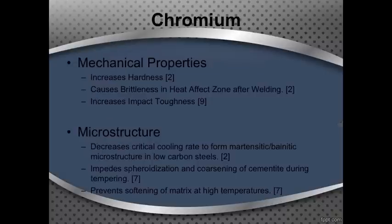The first element I'd like to talk about is chromium. Chromium is a very versatile element that you can add to steel. Among the mechanical properties it affects is the hardness — it increases the hardness — but it can also cause brittleness in the heat-affected zone upon welding. It also increases the impact toughness, particularly in powdered metal. The effects it has on the microstructure include a decrease in the critical cooling rate to form the martensite or martensitic-bainitic microstructure in low carbon steels.